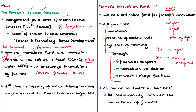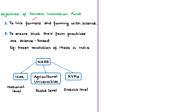The Farmers Innovation Fund will also encourage farmers to create modern tools and systems of farming. As part of this system, an Innovation Center in Delhi would be established where the innovations of farmers would be scientifically validated and farmers would be allowed to pursue their research. There are two objectives of this fund: first, to link farmers and farming with science; and second, to ensure that their farm practices have a scientific basis — promoting a scientific approach among farmers.